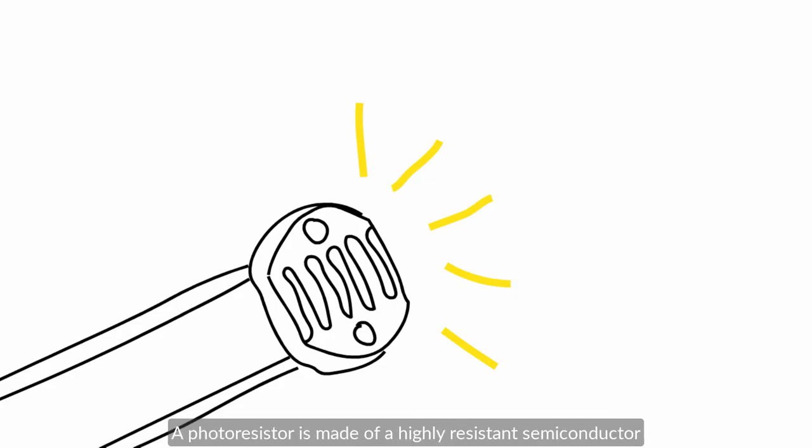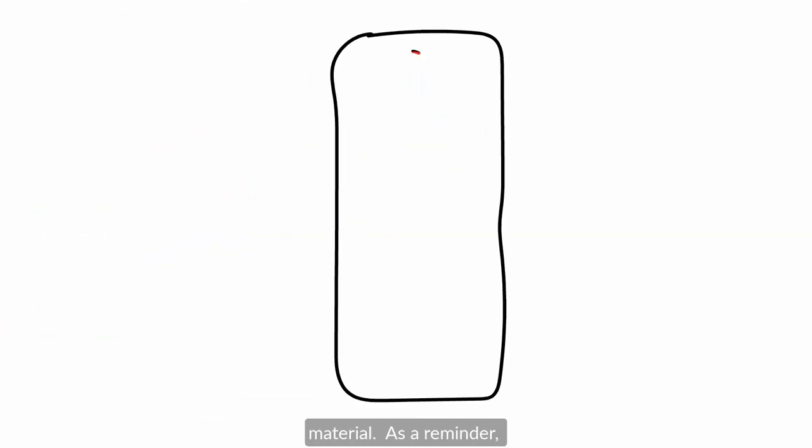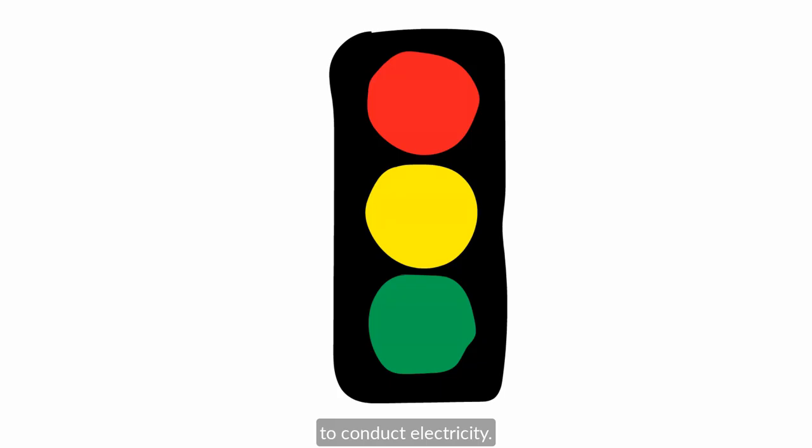A photoresistor is made of a highly resistant semiconductor material. As a reminder, materials can be categorized in three ways depending on their ability to conduct electricity.